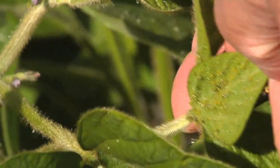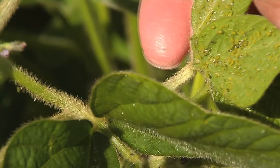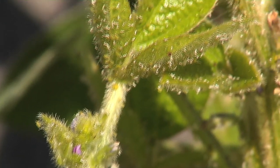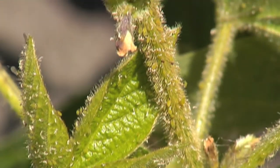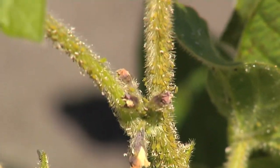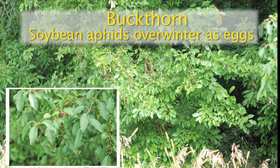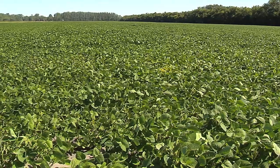Part of the reason is we have aphids that migrate up into North Dakota from the southern states, and also the population levels vary year to year within the state because the eggs overwinter on the buckthorn, and it has multiple generations — up to 15 or more per year — so the populations can fluctuate.